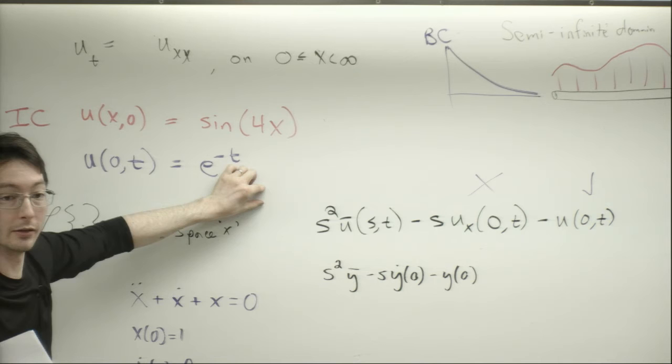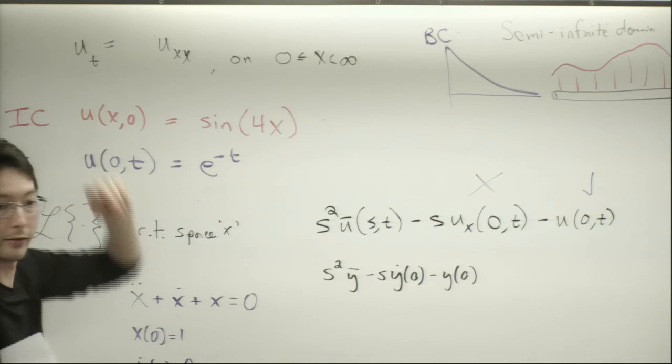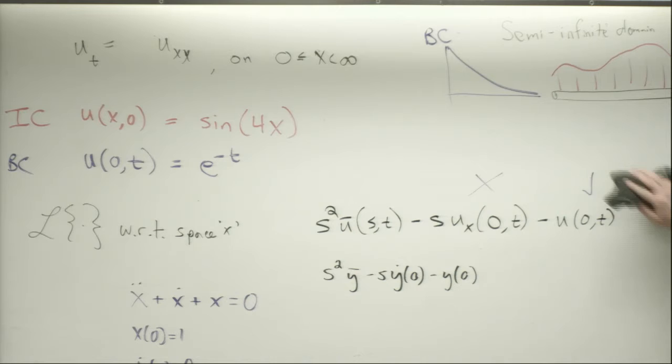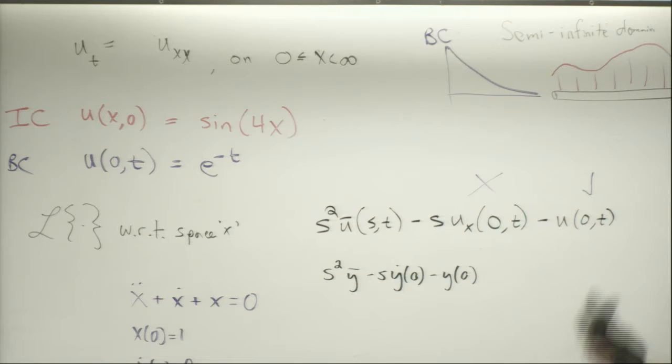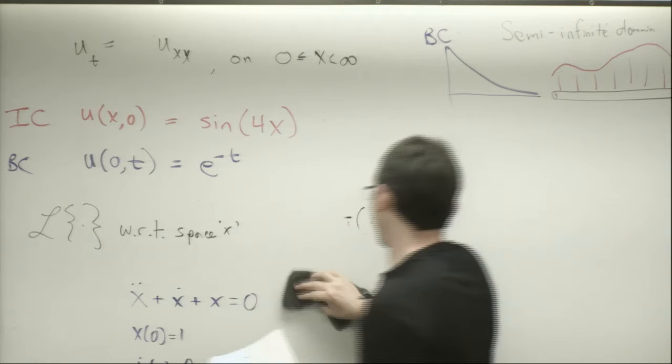If I gave you another boundary condition — for example, if I specified that u_x at 0 and t equals some value — you could certainly do this. This is also a question I always ask on the quals: I give you a Laplace transform solution and ask you to justify why you chose the variable you chose and whether you could do it in the other variable. You have to really think about what the boundary conditions and initial conditions are telling you.